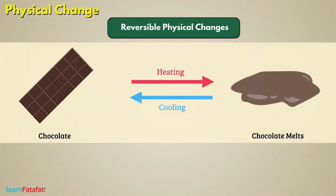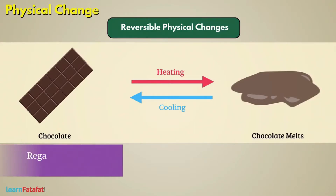This means that after the change, it is possible to regain the shape, size, colour or state of the substance by undoing the applied conditions.